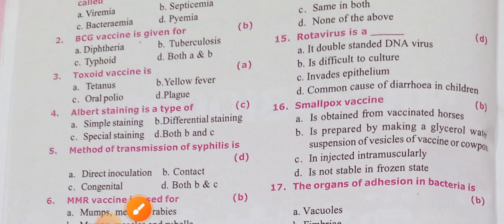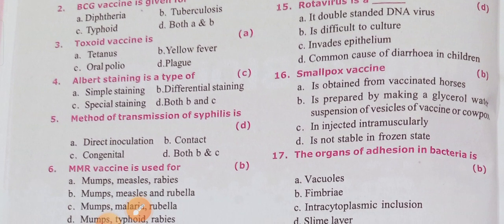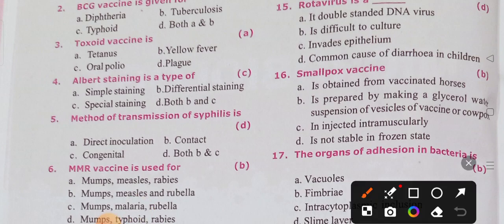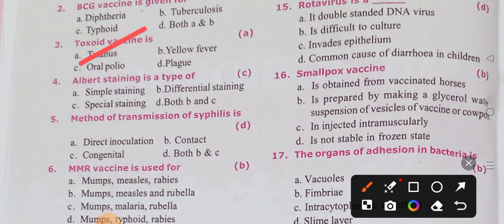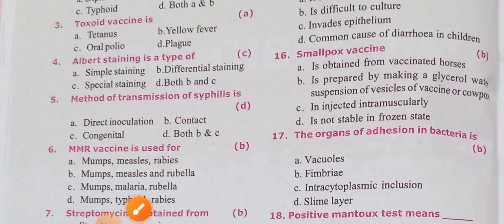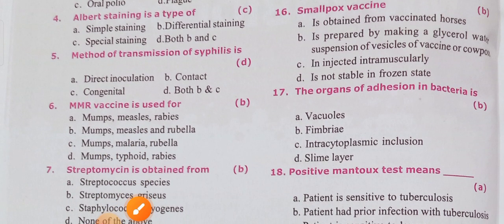Toxoid vaccine is for tetanus. Tetanus toxoid is a tetanus vaccine — it is not for other conditions. The toxoid vaccine is given to prevent tetanus.